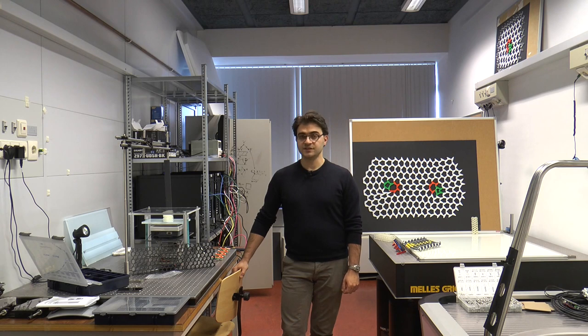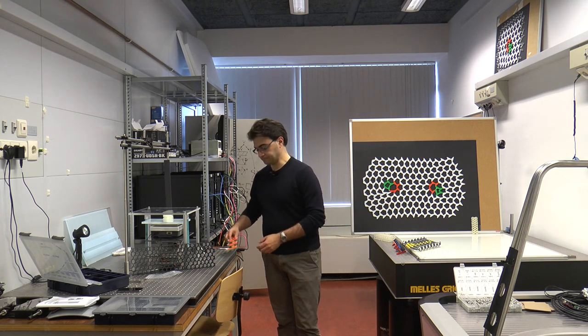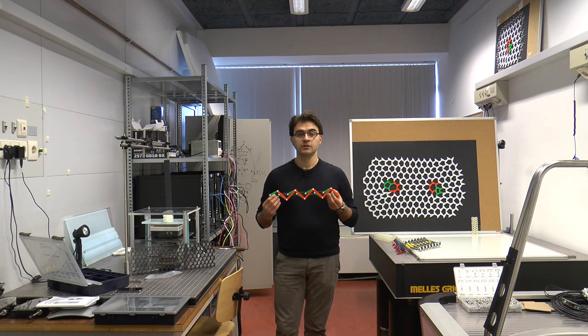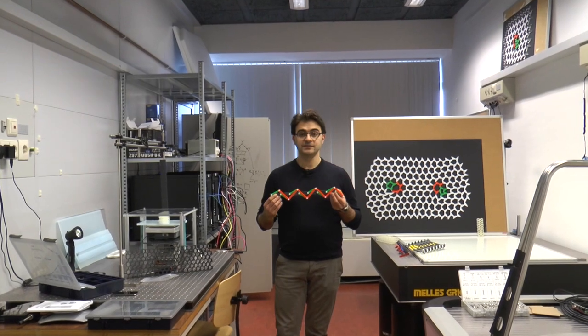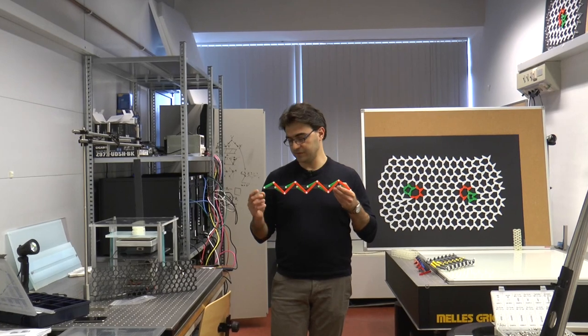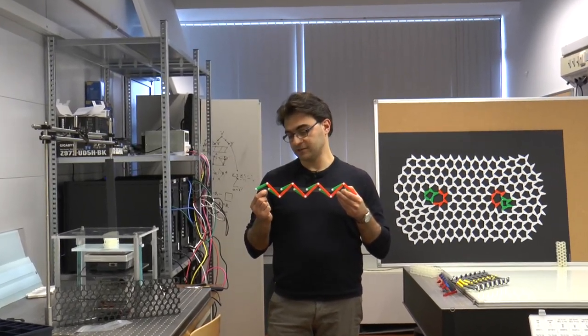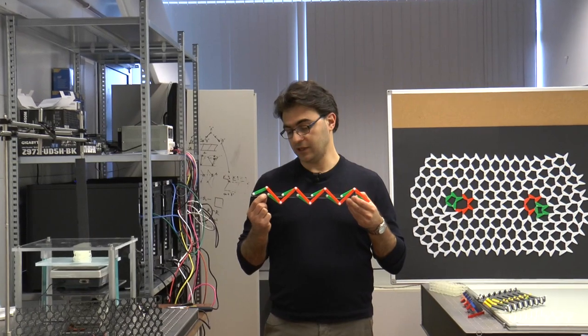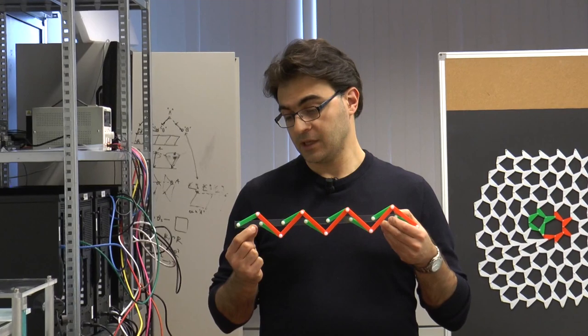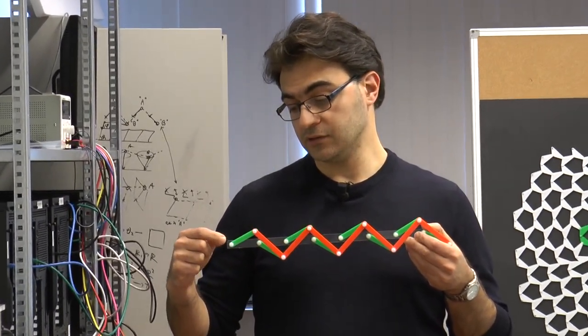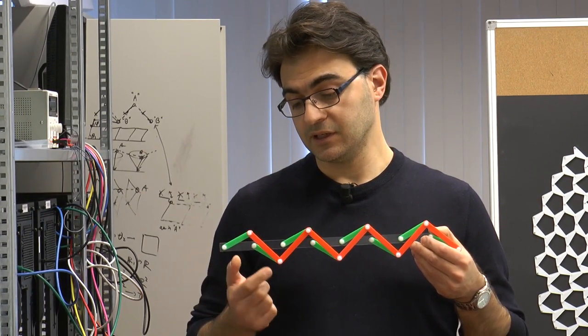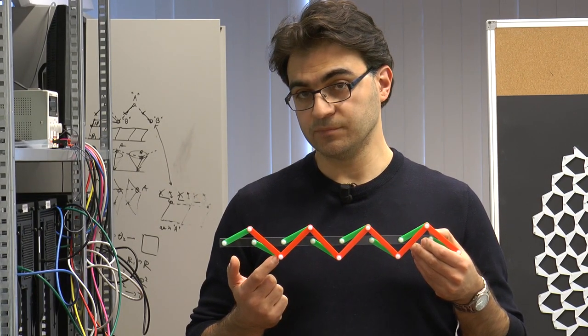Let me illustrate some of the key ideas with a simple example. I'm holding in my hands a chain. This structure has been assembled very easily by taking a transparent plastic rod, to which green rotors are attached, and they are free to rotate around these pivots. The rotors are themselves coupled by red rigid bars.